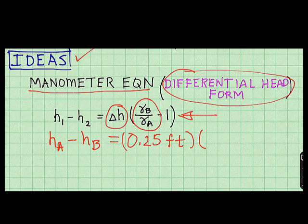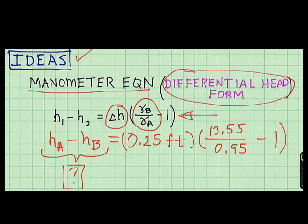So this becomes, and fluid A is the oil, so this is 13.55 divided by 0.95, and I subtract 1. And looking at this equation, there's one of the problem goals, the difference in piezometric head. Everything on the right-hand side is known, so I can reach one of the problem goals.